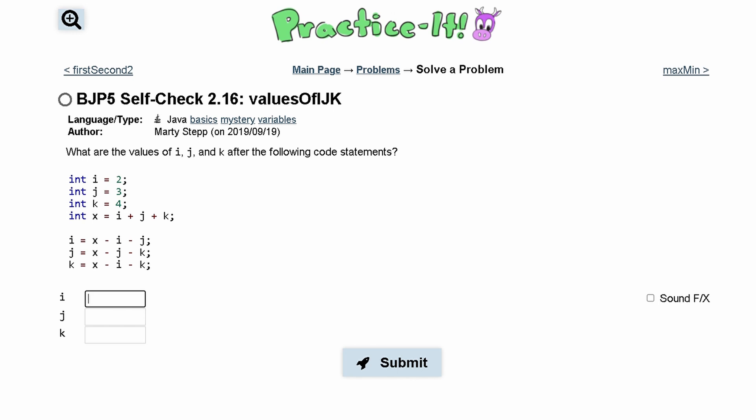First we have that our I is equal to 2, J is equal to 3, K is equal to 4, and then X is going to be equal to I, J, and K added together. So that means X is going to be equal to 9.